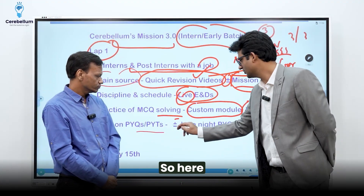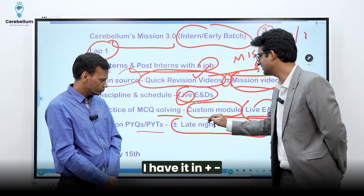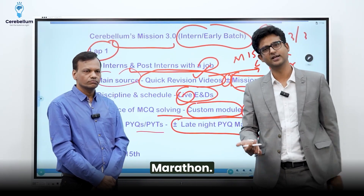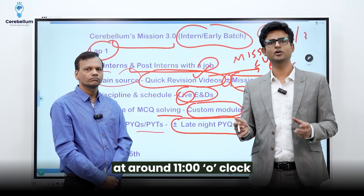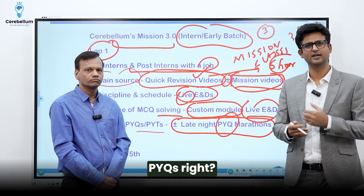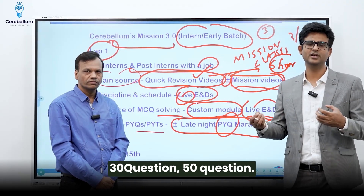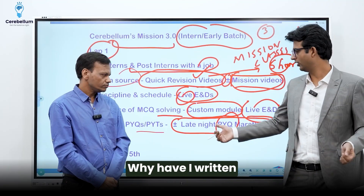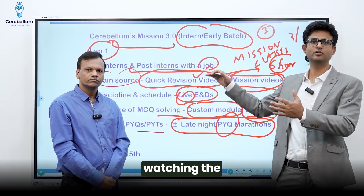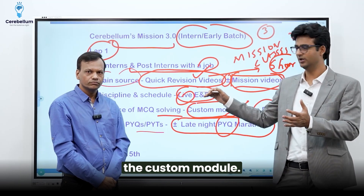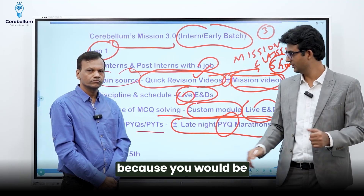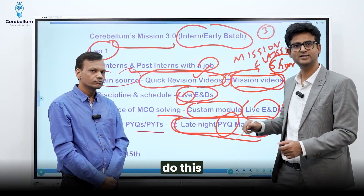Now, PYQs — I have written plus-minus late night PYQ marathon. Let me explain what late night PYQ marathons are. Every day at around 11 o'clock, we make a test live which is made of only PYQs — 30, 40, or 50 questions — and you are supposed to answer them. I have written plus-minus because you are in the first phase, already watching quick revision videos and doing custom modules. So even if you are not able to do the late night PYQ, that is fine because you would be asked to do this in the second lap.